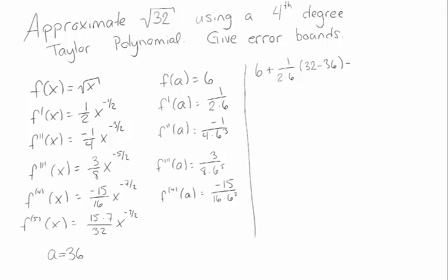The number two term is 1 over 2 factorial times the second derivative, which is minus 1 over 4 times 6 cubed times (x minus a) squared, that's term 2.